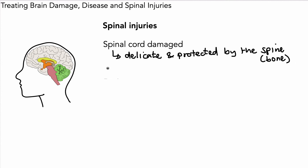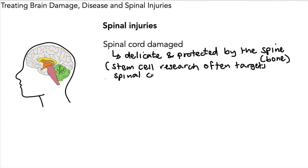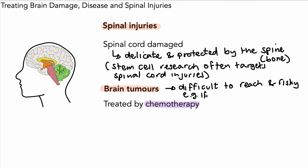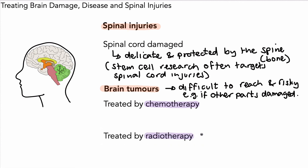It's worth mentioning that stem cell research often targets spinal cord injuries — this is a learning link to another topic in biology and one of the uses of stem cell research. A second issue is that of brain tumours. These are difficult to treat by surgery because tumours are difficult to reach and it's very risky — for example, if other parts of the brain were damaged during surgery. However, we can use chemotherapy, which uses drugs given directly into the blood that can travel to the brain and help to destroy a tumour.